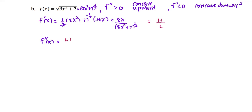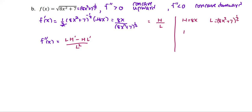The derivative is going to be: low times d high, minus high times d low, all over low squared. So as a side note, for the high, which is 8x, and the low is 8x squared plus 7 to the power 1 half, the d high is 8, and d low is the derivative of 8x squared plus 7 to the power 1 half, which is the same as the first derivative — we just borrowed that form. So d low is 8x over 8x squared plus 7 to the power 1 half.